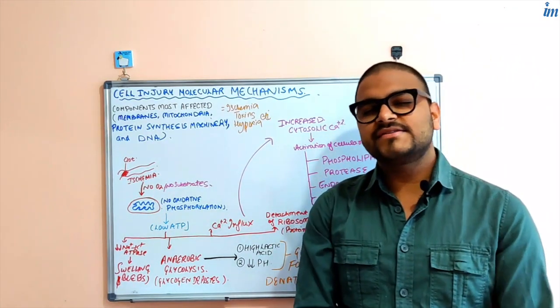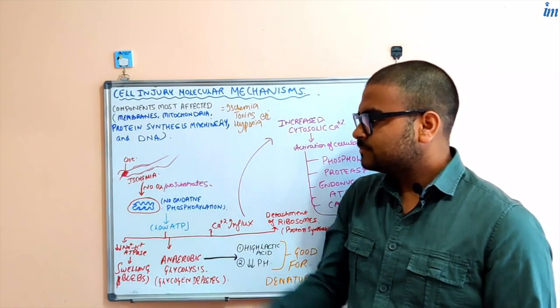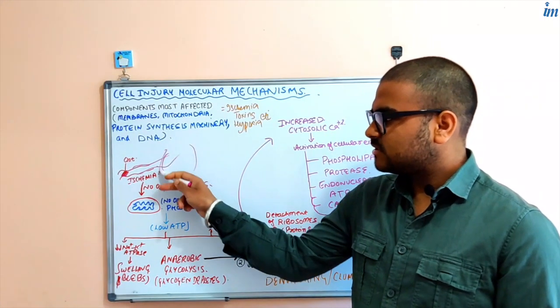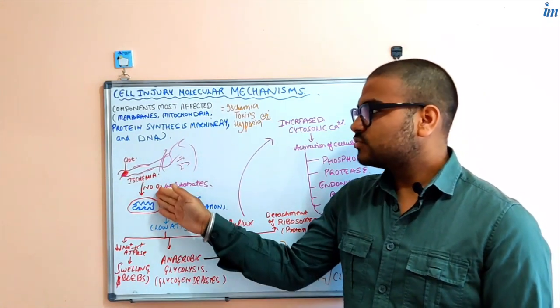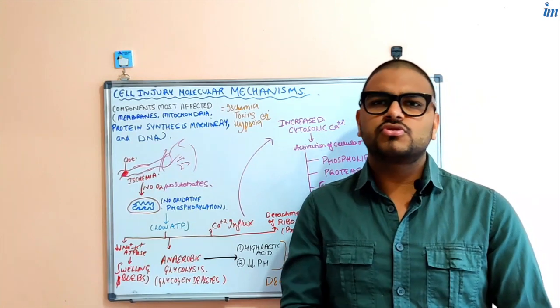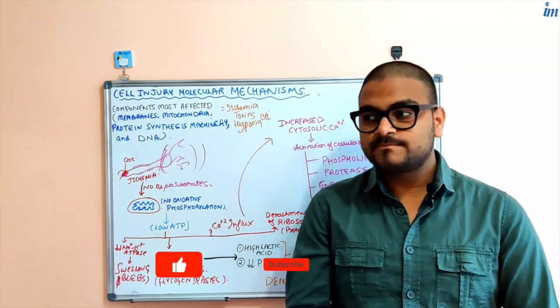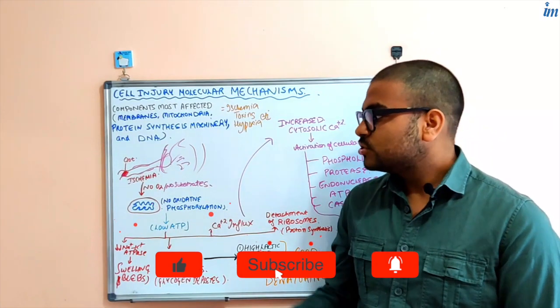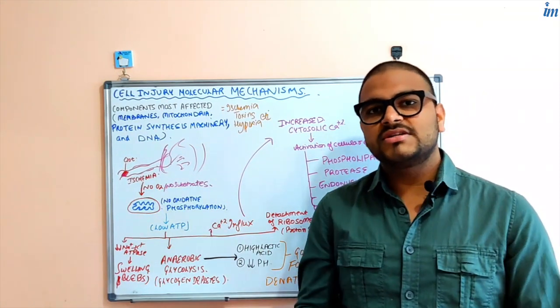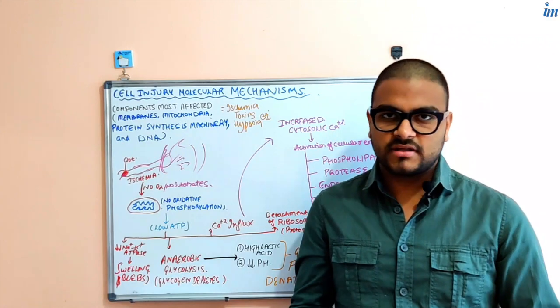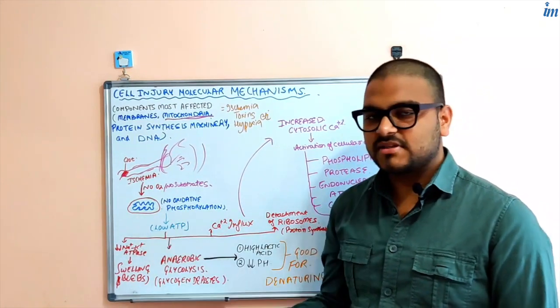Let us take the example of an ischemic injury. I have drawn a clot here in a blood vessel, and the area distal to the clot is ischemic. Ischemic means that this area is not getting oxygen supply or nutritional supply - whether glucose, amino acids, or anything in the blood. The cell is not getting the substances or oxygen.